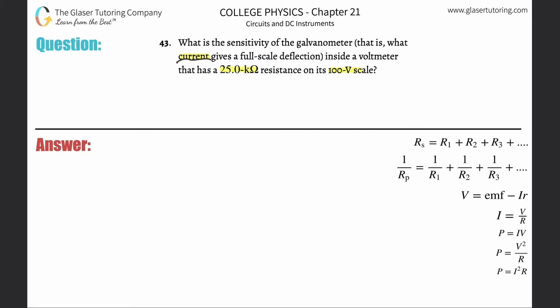asking what current will register at 100 volts. In other words, if you know the voltage and the resistance, we can find that current using Ohm's law. That's all we have to do here.